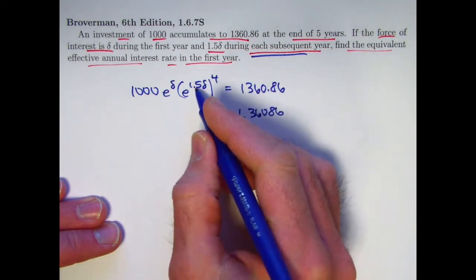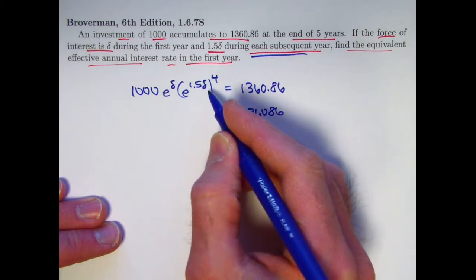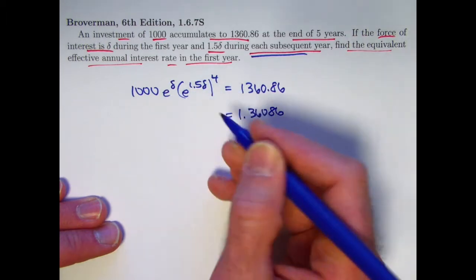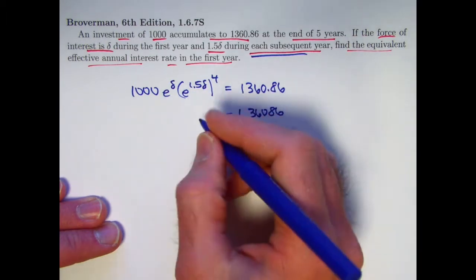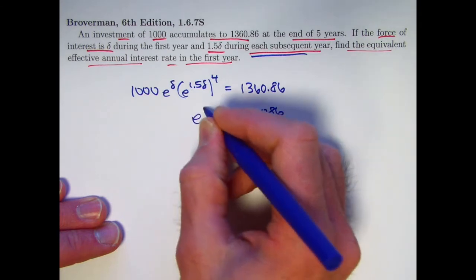We can also multiply 4 times 1.5 delta to get 6 delta. e to the delta times e to the 6 delta. You can add the exponents to get 7 delta, e to the 7 delta.